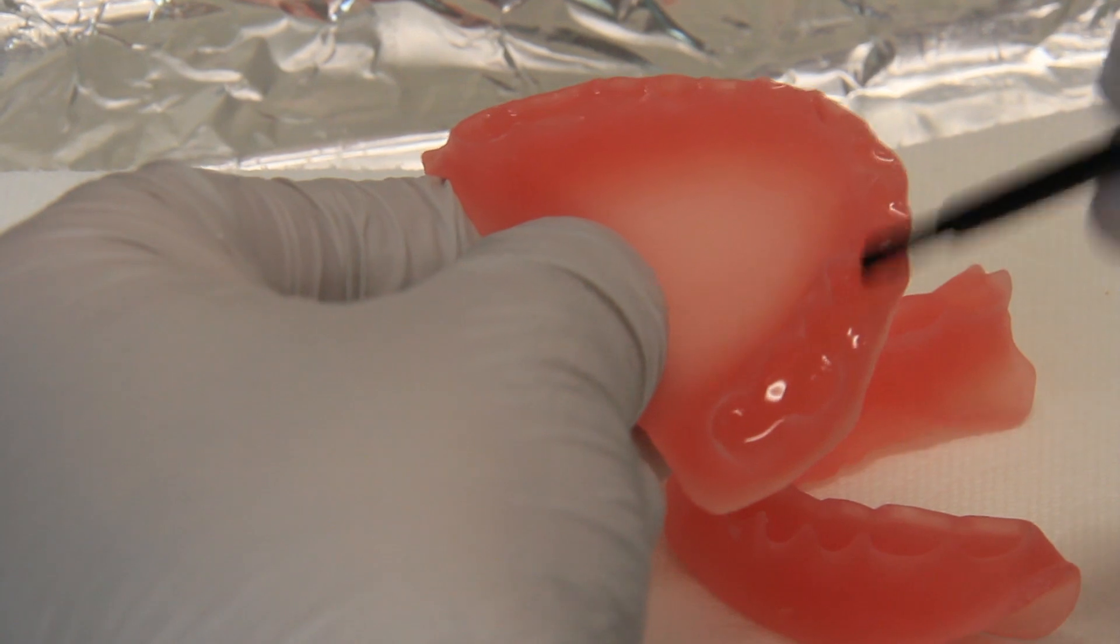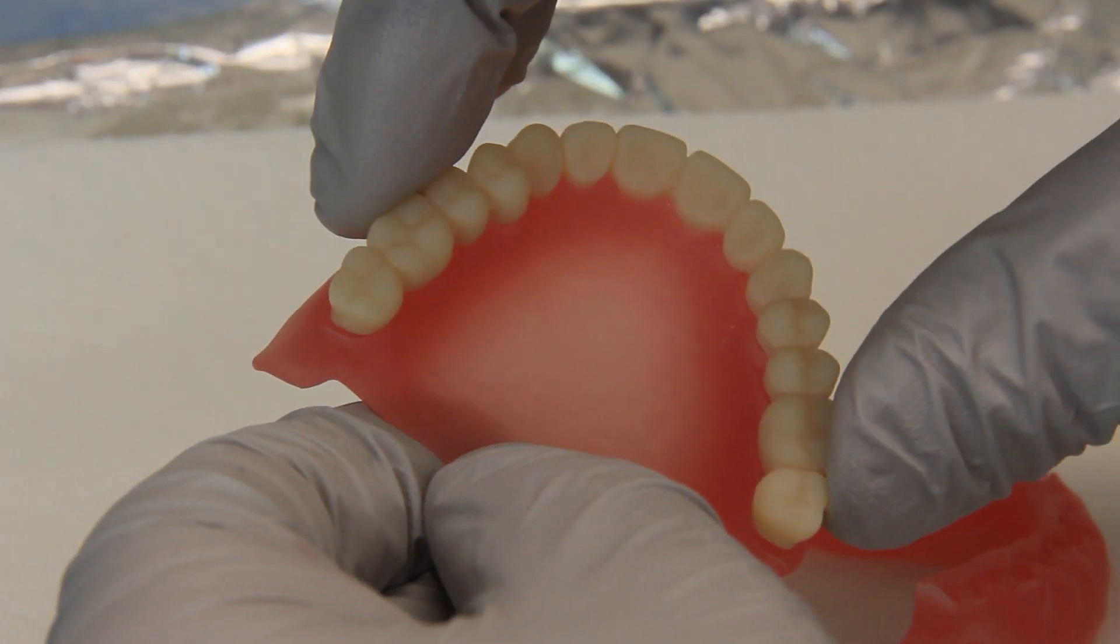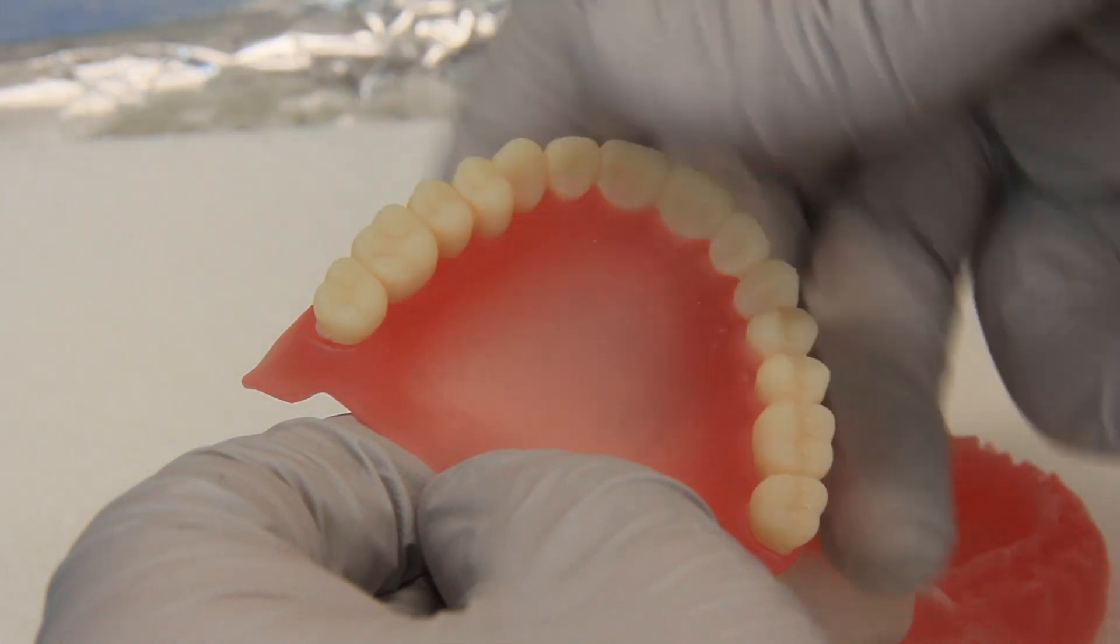After the parts have been printed and cleaned, the teeth are attached to the base with a small amount of resin and a few seconds of controlled ultraviolet light.